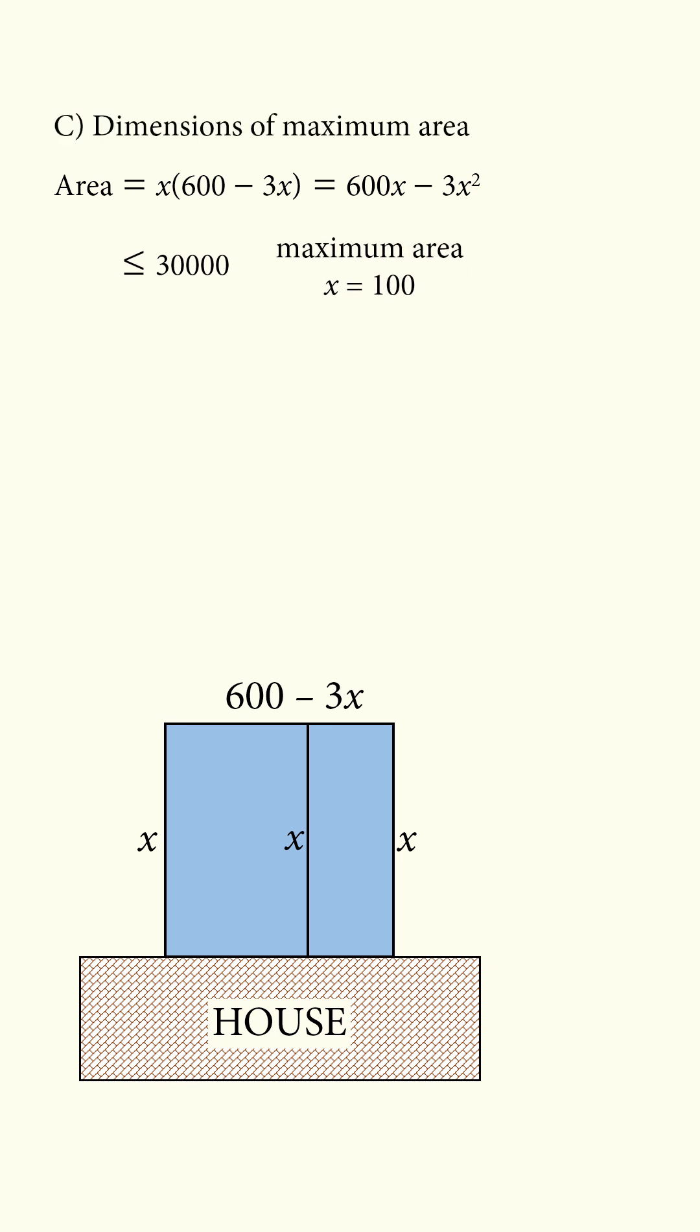Finally, we need the dimensions. x is equal to 100. The other side is 600 minus 3x, which equals 300. So the dimensions are 100 by 300 meters.